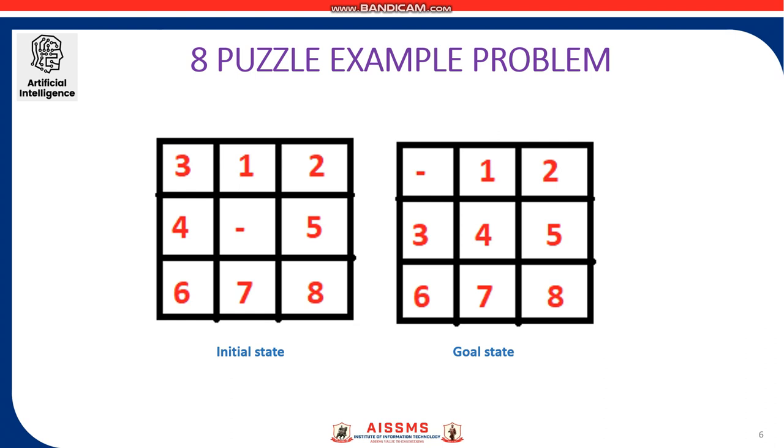The second step is to analyze the problem by performing various operations and conditions for attaining the goal state. So, these are the conditions for moving the blank space which can be either up or down or right or left but not diagonal. A tile adjacent to the blank space can slide into the blank space.